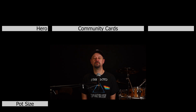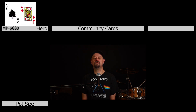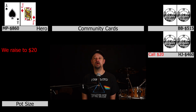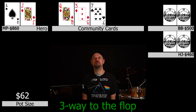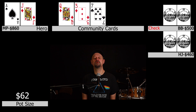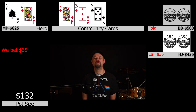This hand is from 2/5 no-limit hold'em. Hero is in middle position with an $880 stack and gets dealt ace-jack offsuit. We raise first in to $20. The hijack on our immediate left calls for $20 — he plays about 75% of his hands, is pretty aggressive, and sticky, playing around $460 behind. The big blind also calls — a typical rec player, pretty much fit-or-fold post-flop, with about $500 behind. We go to the flop three ways. The flop comes out queen-three-seven with two diamonds and a club. The big blind checks to us and we bet $35. The hijack calls and the big blind folds.